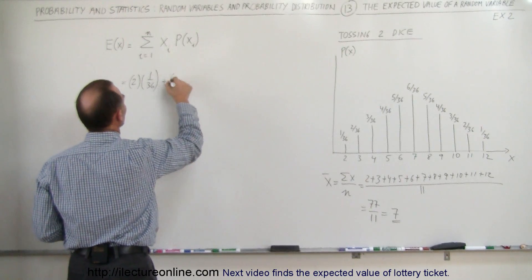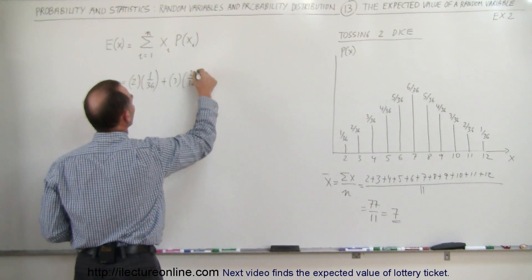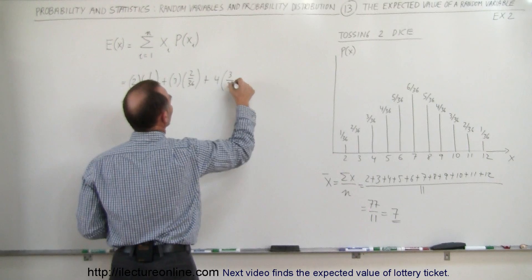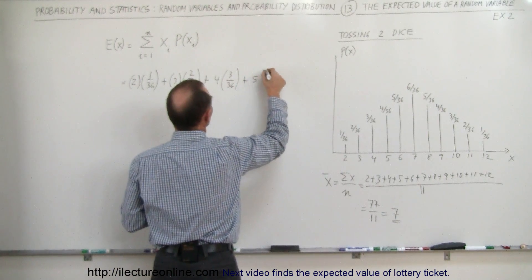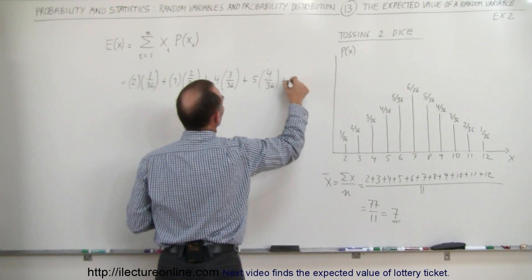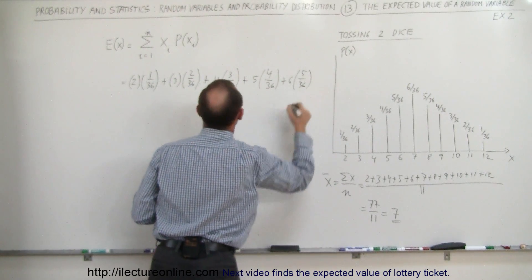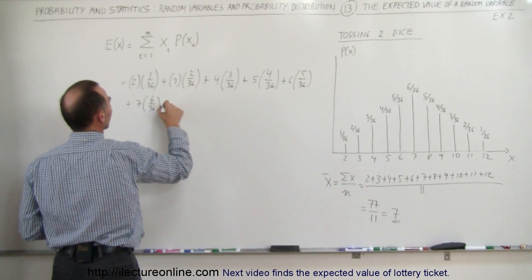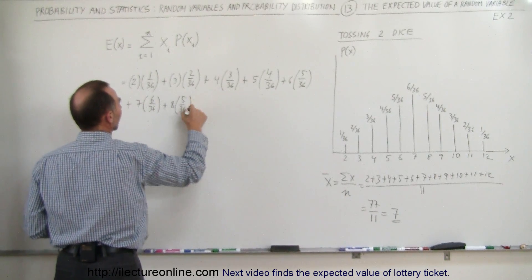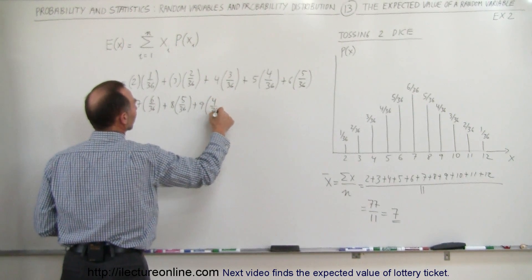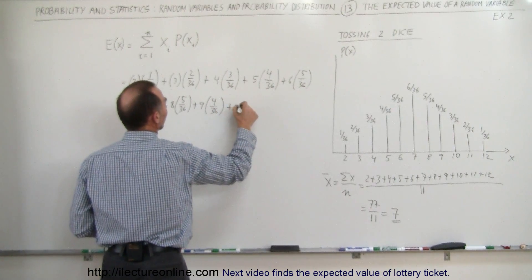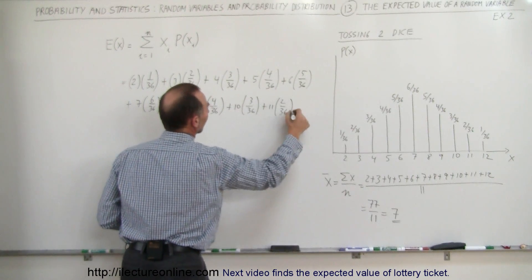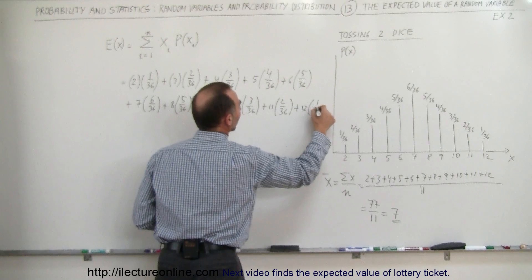So this would be plus 3 times 2 out of 36, plus 4 times 3 out of 36, plus 5 times 4 out of 36, plus 6 times 5 out of 36, plus 7 times 6 out of 36, plus 8 times 5 out of 36, plus 9 times 4 out of 36, plus 10 times 3 out of 36, plus 11 times 2 out of 36, plus 12 times 1 out of 36.